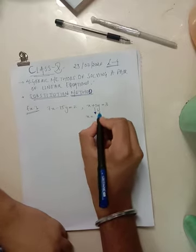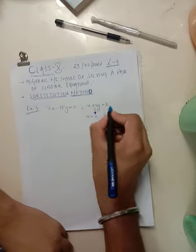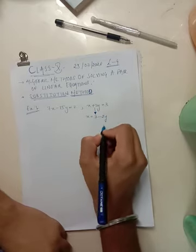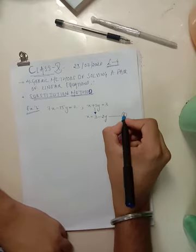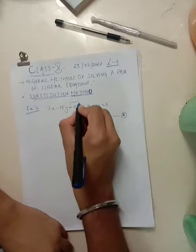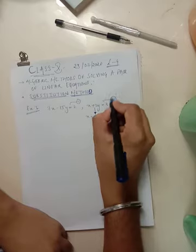That would be transposing 2y on the RHS. I would get x is equal to 3 minus 2y. This would then become my equation 1 or I should say equation a as I would be naming them 1 and 2.